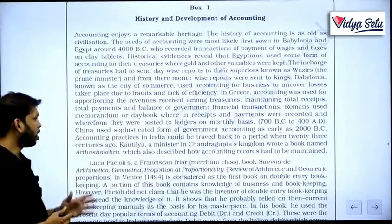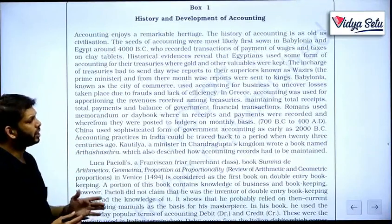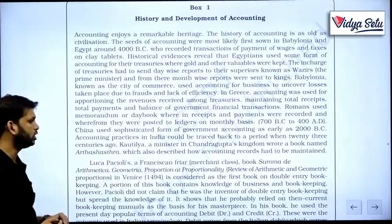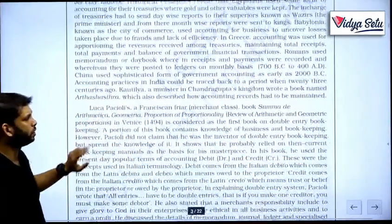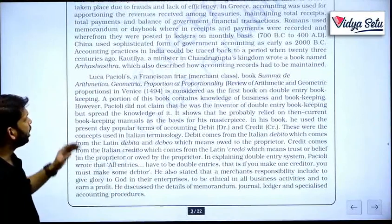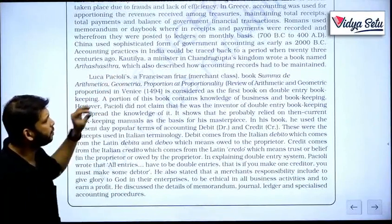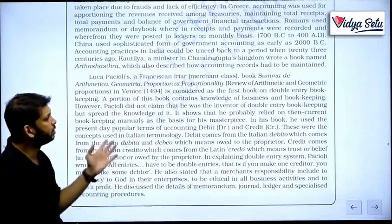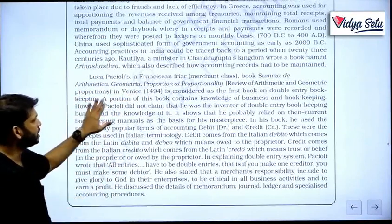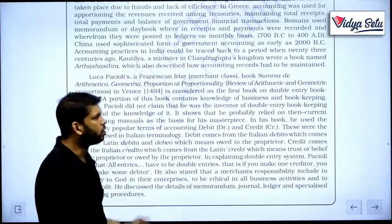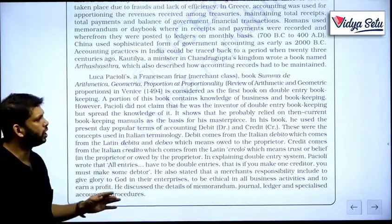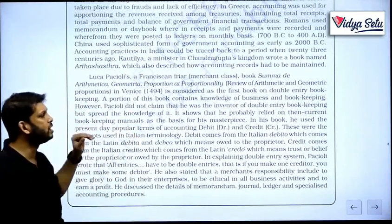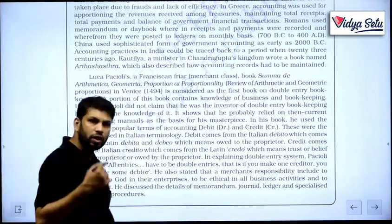From 700 BC to 400 AD, China used a sophisticated form of government accounting. As early as 2000 BC, accounting practices in India could be traced back to when, 23 centuries ago, Kautilya — a minister of Chandragupta's kingdom — wrote a book named Arthashastra, which also described how accounting records are to be maintained. Luca Pacioli, a Franciscan friar, wrote Summa de Arithmetica, Geometria, Proportioni et Proportionalità in Venice in 1494, considered the first book on double-entry bookkeeping.